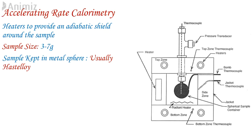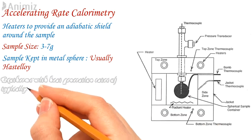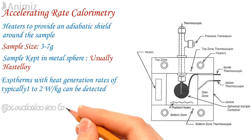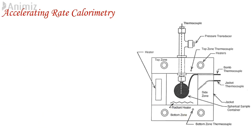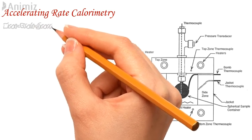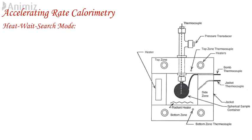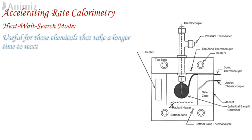It is possible to calculate adiabatic temperature rise data, self-heating data against time, and temperature, pressure, and pressure rate data. Exotherms with a heat generation rate of typically 1–2 W/kg can be detected. Gas evolution can be detected from relatively low rates by analyzing the isothermal hold period of the resulting traces. Commercially available ARC can be operated in heat-wait-search mode: the sample is heated to a predetermined temperature and tested for self-heating. If self-heating is detected, the calorimeter switches to adiabatic mode immediately. If no self-heating is detected within the specified period, the temperature is increased and the process is repeated. This mode is useful for chemicals that take longer to react and is more accurate than dynamic mode for determining onset temperature.